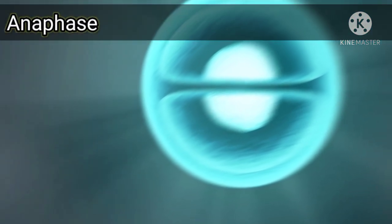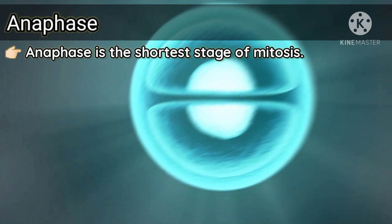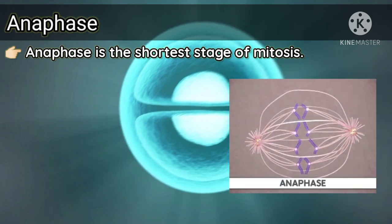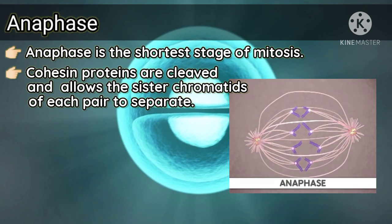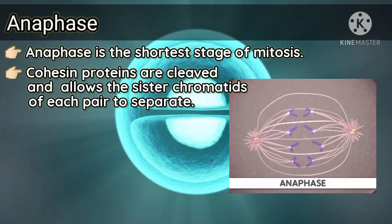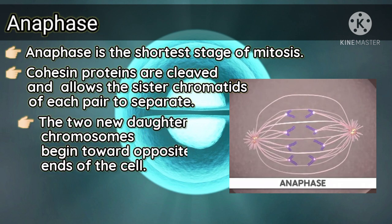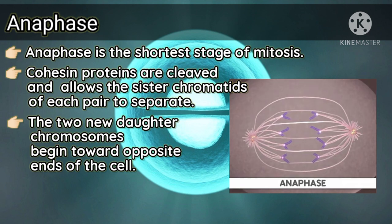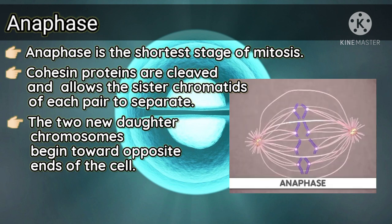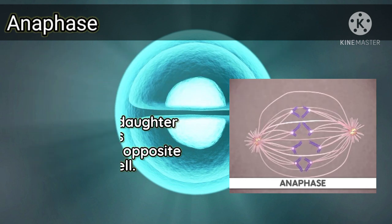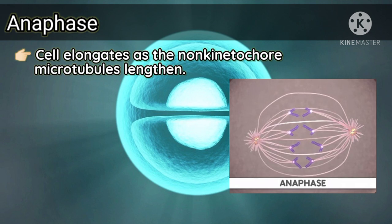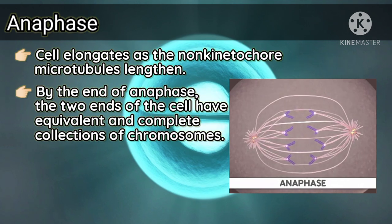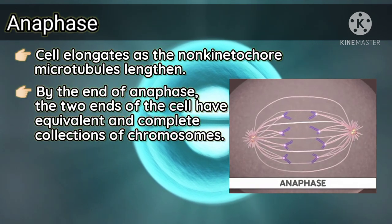The next stage is anaphase — the shortest stage of mitosis, lasting only a few minutes. Anaphase begins when the cohesin proteins are cleaved, allowing the two sister chromatids of each pair to separate suddenly. Each chromatid becomes an independent chromosome. As their kinetochore microtubules shorten, the two sets of chromosomes begin moving towards opposite ends of the cell. The cell elongates as the non-kinetochore microtubules lengthen.